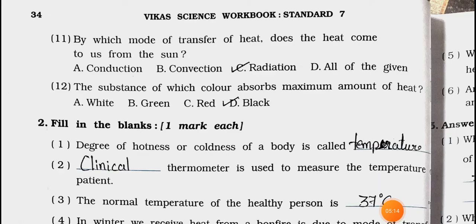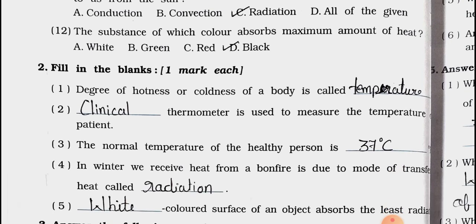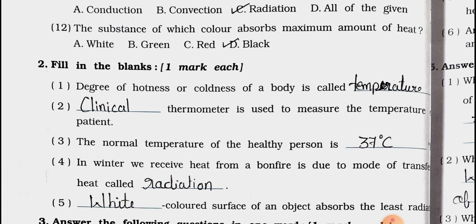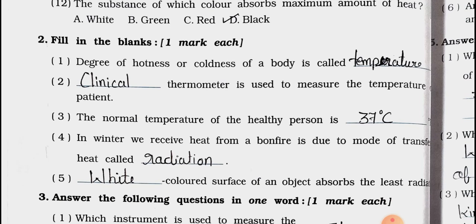Number 11: By which mode of transfer of heat does the heat come to us from the sun? Options are: A. conduction, B. convection, C. radiation, and D. all of the given. Answer is option C, radiation. Question number 12: Objects of which color absorb maximum amount of heat? A. white, B. green, C. red, and D. black. Answer is option D, black. Now see Main 2, fill in the blanks.